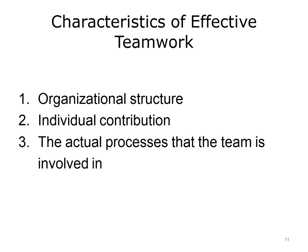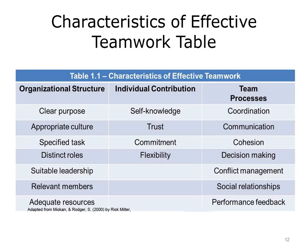There is a great deal of literature and research regarding teams. One of the more commonly accepted ways of dissecting team characteristics is to cluster them into three areas: organizational structure, individual contribution, and the actual processes that the team utilizes. Here is a grid that lays out the three structures characteristic of effective teams and some of the detailed elements within each. We are going to discuss each one in turn, starting with organizational structure.